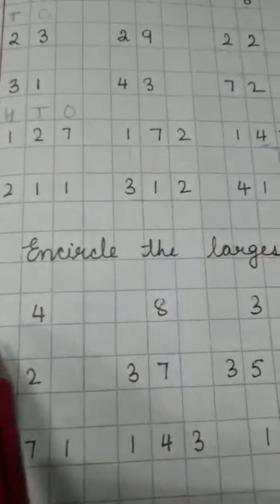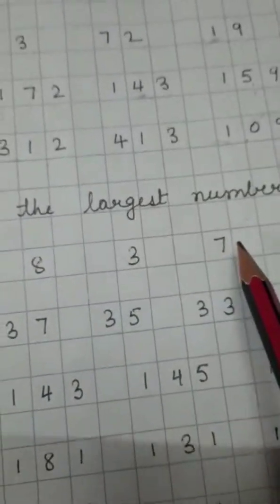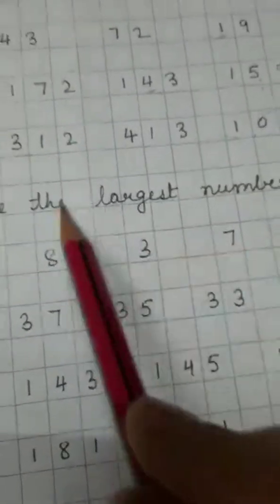Now question number 1 is 4, 8, 3, 7. Now which is the biggest number over here? 8, okay?